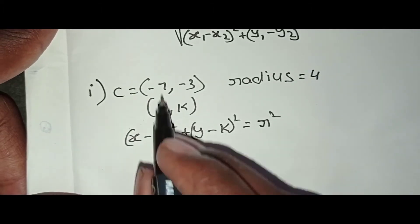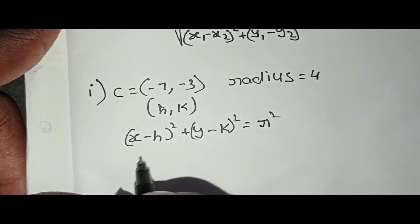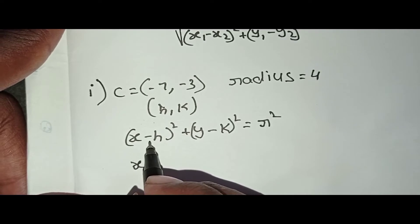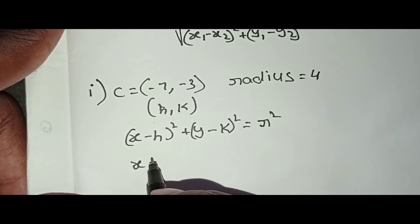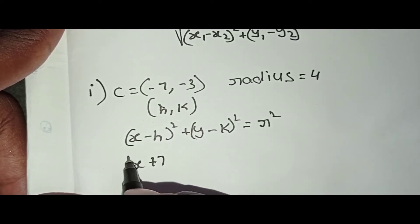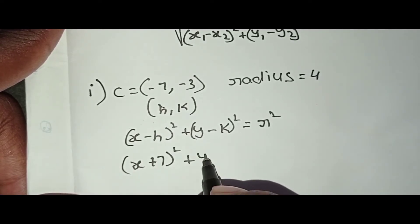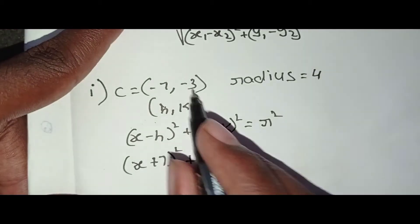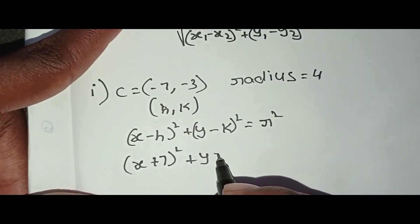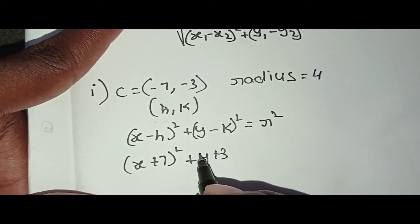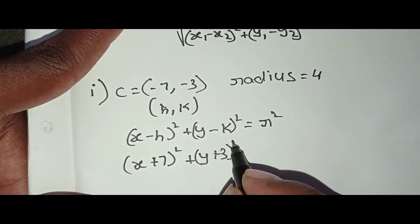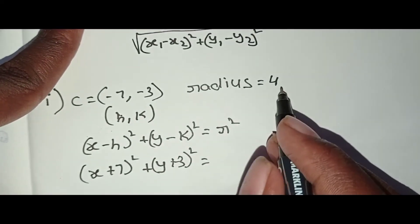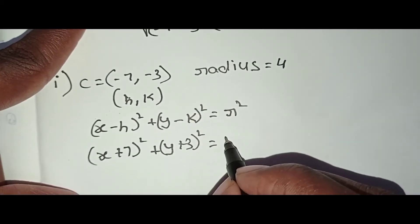Simplifying the signs: (x + 7)² + (y + 3)² = 16. So r² = 4² = 16.